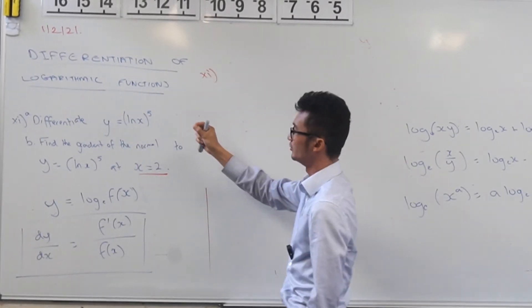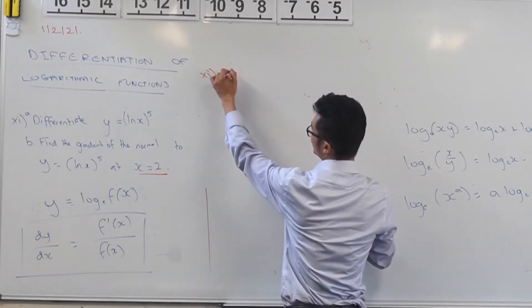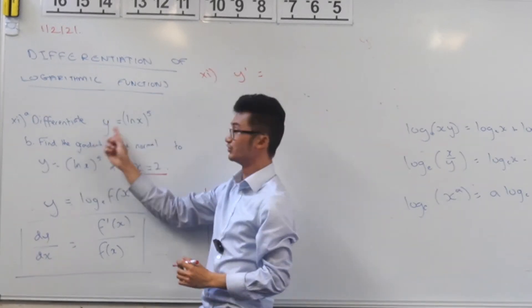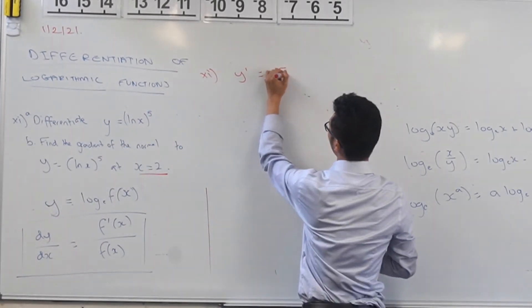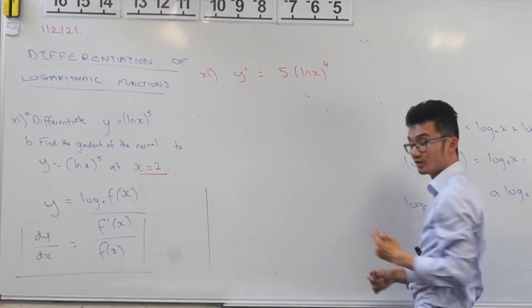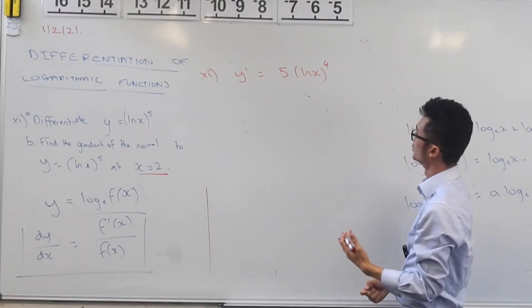So here we do actually have to use the chain rule because this is actually just a function on the inside. So this is going to be, again thinking about how you usually use chain rule, drop the power down, keep the original the same. Now the power here decreases by 1, but what happens when I apply chain rule, I have to differentiate the inside component as well.